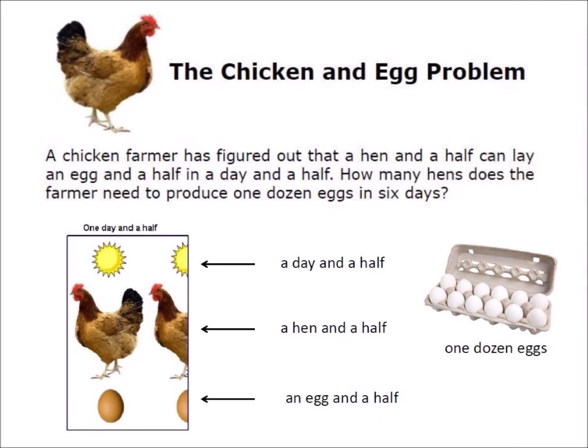We start with a chicken and egg problem. A chicken farmer has figured out that a hen and a half can lay an egg and a half in a day and a half. How many hens does the farmer need to produce one dozen eggs in six days? You will learn the answer in due time.